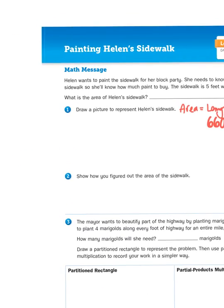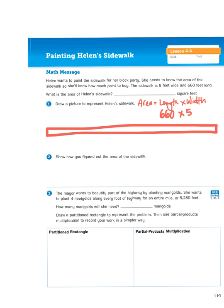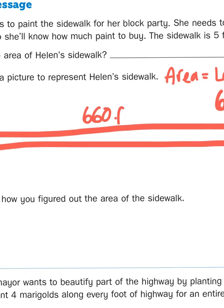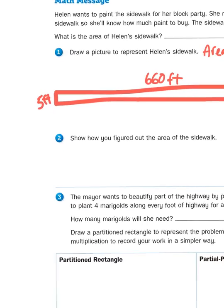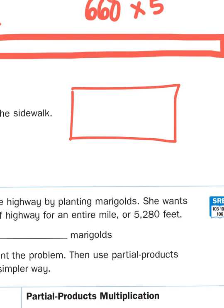Draw a picture to represent Helen's sidewalk. Now, that's an extremely long and skinny rectangle. It would look something like this and it is not to scale. But the length is 660 and the width is 5. So if I were to use partitioned rectangles to figure it out, this is what I would do. I would take a rectangle. I would split it up into 3 boxes because 660 is a 3-digit number. 660 is 600 plus 60 plus no ones. And I'm going to multiply each part by 5.